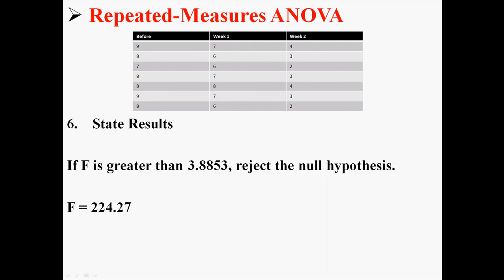So remember our decision rule was, if f is greater than 3.8853 reject the null hypothesis, we found an f of 224.27. So we're definitely going to reject the null hypothesis.